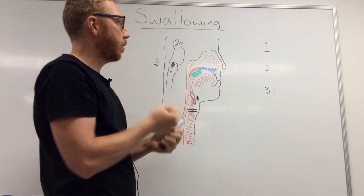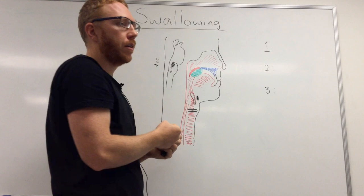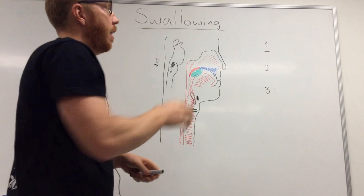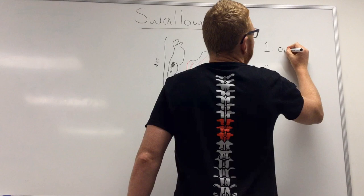To swallow, we have to coordinate these two systems — as we push food down, we don't want to push it into the respiratory tract, and we don't want to be initiating breathing whilst we're trying to swallow. The swallowing process is coordinated between voluntary and involuntary phases, and these can be broken into three main phases.